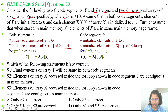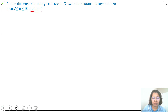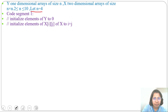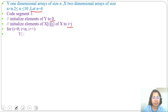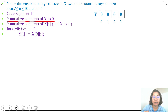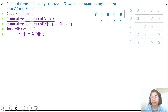I am considering N equals to 4. Now for Code Segment 1: initialize elements of Y to 0, then initialize elements X[i][j] to i+j. So all Y values will be 0, and X[i][j] will be i+j.